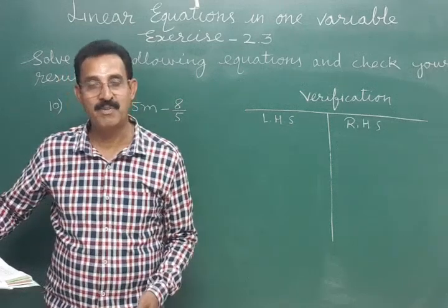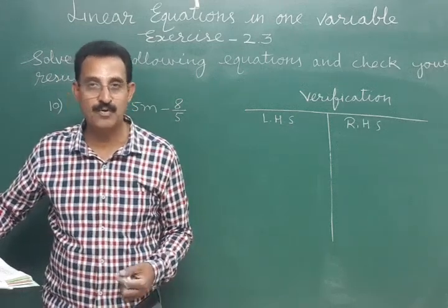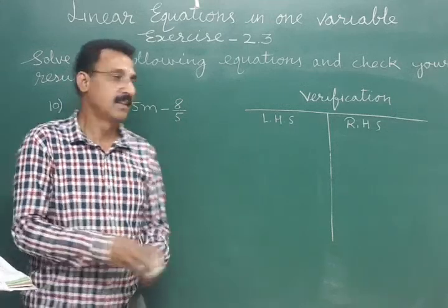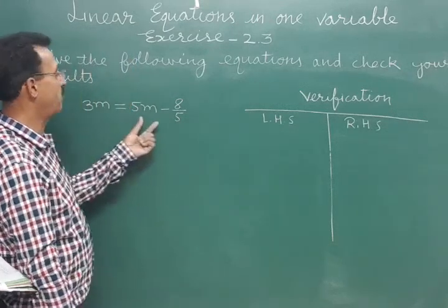Alright, welcome once again. Question number 10, and this is the last question of exercise 2.3 from the chapter of linear equations in one variable. So the question is 3m is equal to 5m minus 8 upon 5.